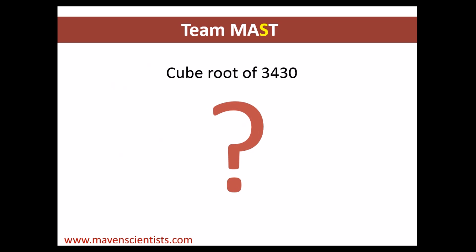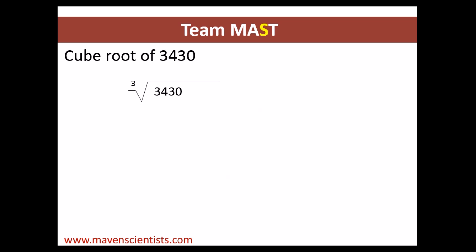First of all, let's take an example — number 3430. Let's try to find out the cube root of 3430. We have to find what number, multiplied by itself three times, equals 3430.